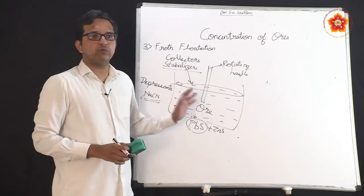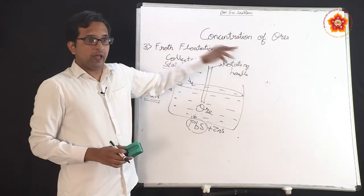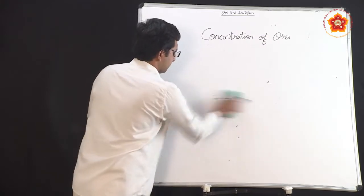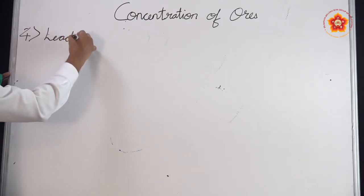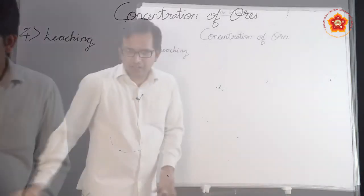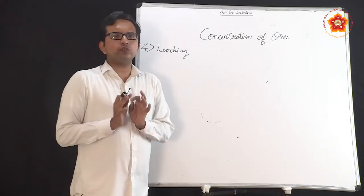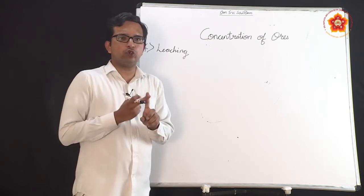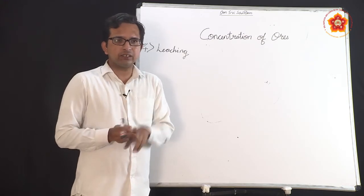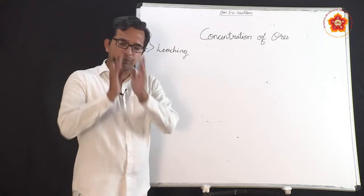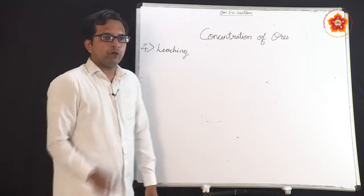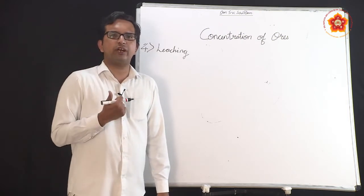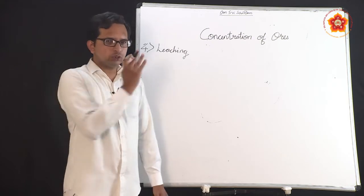The fourth and final method is leaching. This method is employed for ores that are soluble in particular solvents. The criteria: in hydraulic washing, gangue must be lighter; in magnetic separation, one component must be magnetic; in froth flotation, it is used for sulfide ores; in leaching, the ore must be soluble in a specific solvent.